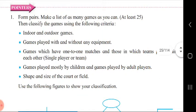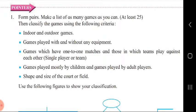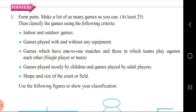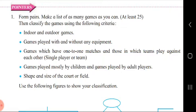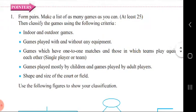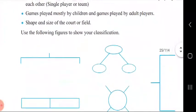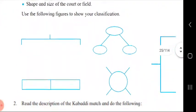Next: the shape and size of the court. The shape of the court for basketball is rectangular, and the size is 26 metres in length and 40 metres in width. For boxing, the shape of the court is square, and the ring should not be less than 12 feet or more than 20 feet. You will complete the classification using the given figures on your own.